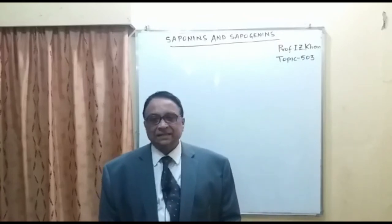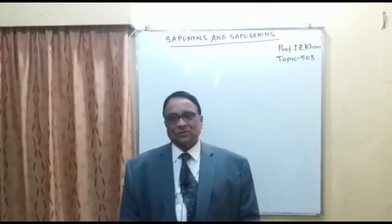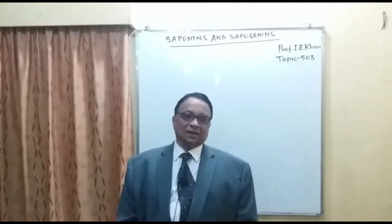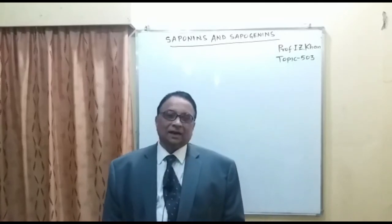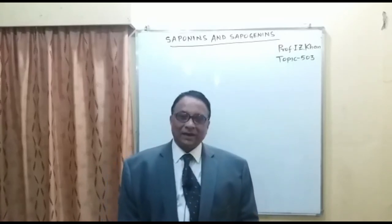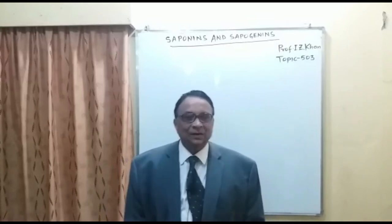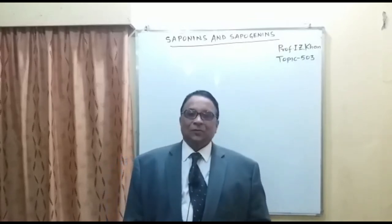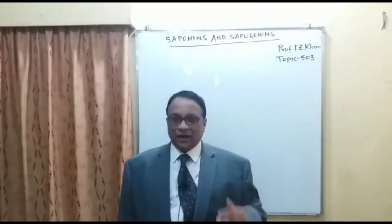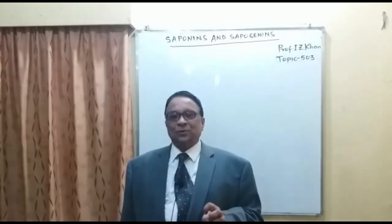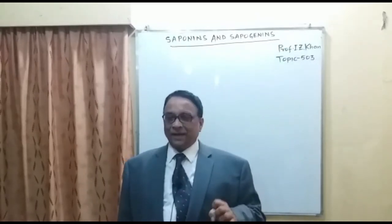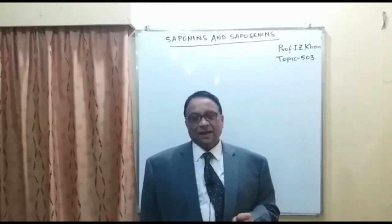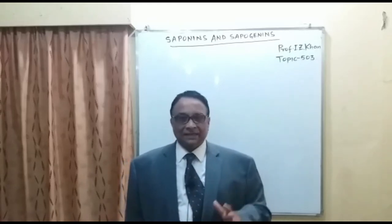These saponins have two types of nucleus. One is called steroidal saponins and the second one is called terpenoidal saponins. When I say steroidal saponins, it means those saponins which have a cyclopentanophenanthrene nucleus.